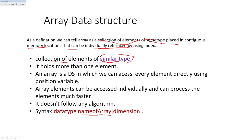Each element can be individually referenced by using an index. The index is a position variable. It is easy to access any element using its index. We use arrays so we can access elements very easily. We use a single data type — for example, integer data type or character data type.